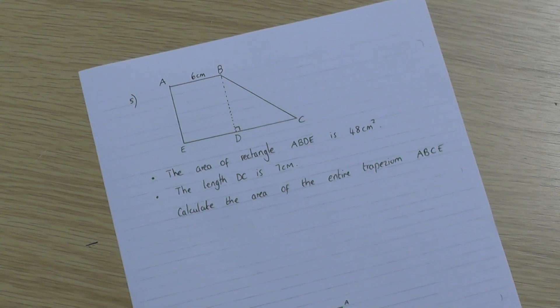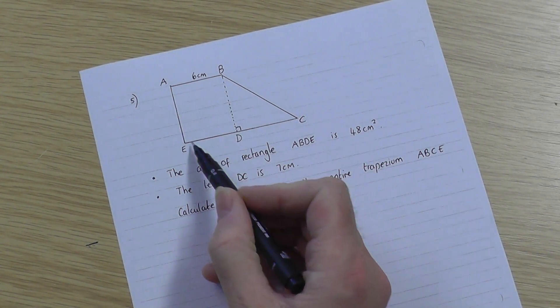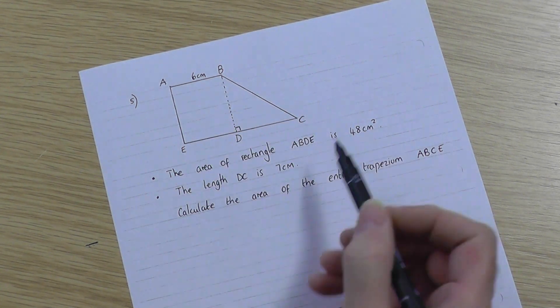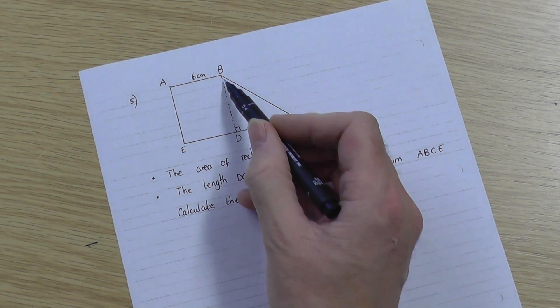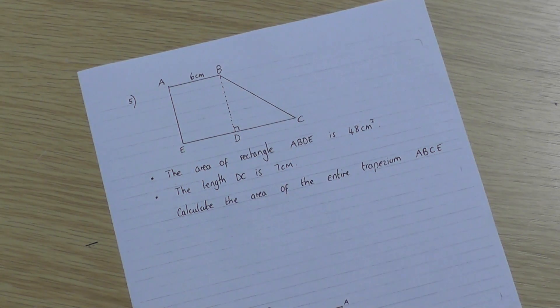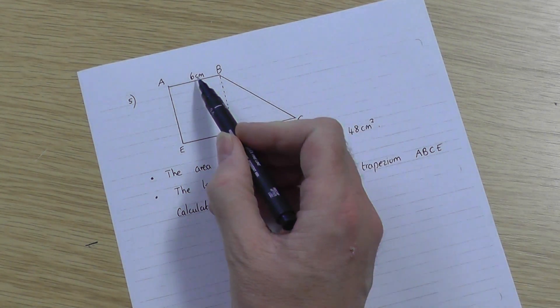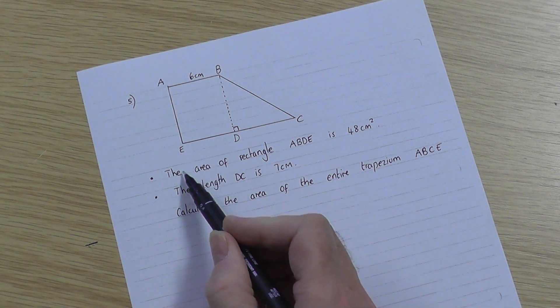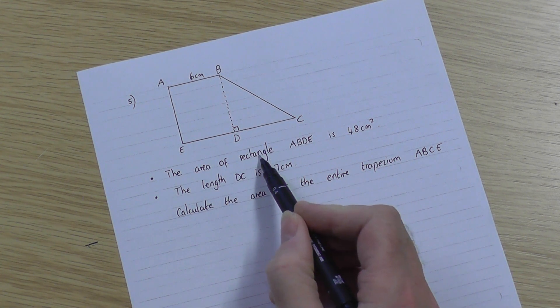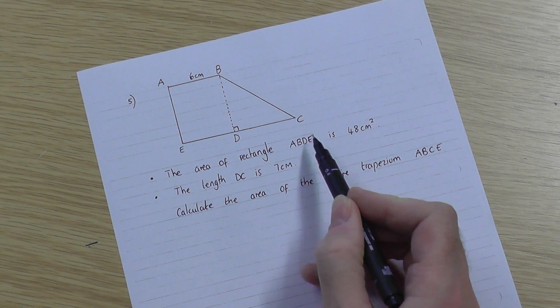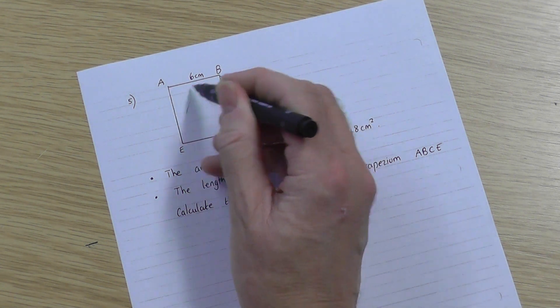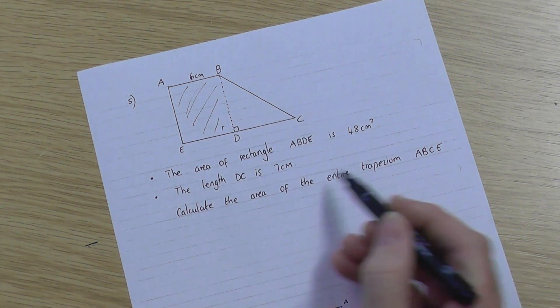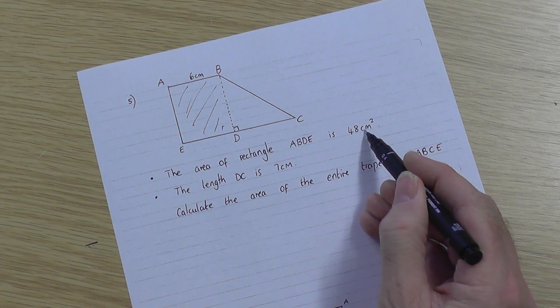Now, if I go on to slightly harder questions, which you could be faced with, something like this. You can see that this is basically a trapezium, but it's been made up of a rectangle, and they've put the dotted line in to help, plus a triangle stuck on the end. And they're giving you some information. They give you a 6 in the picture, across there, and they tell you the area of the rectangle ABDE. So the area of this rectangle I'm shading in here is 48.